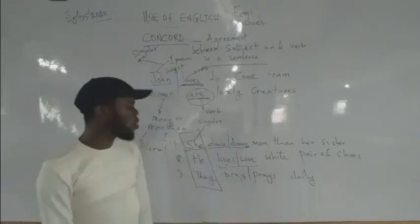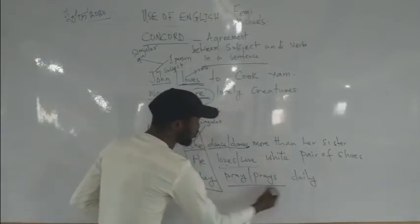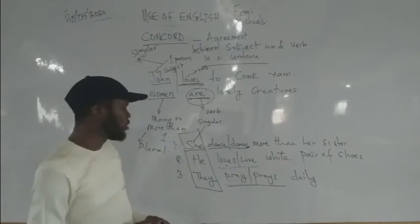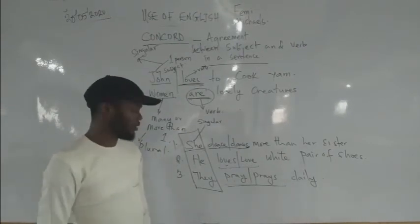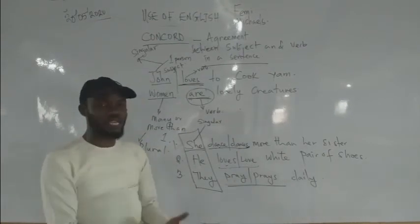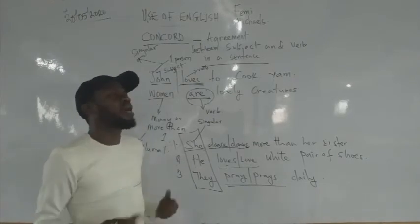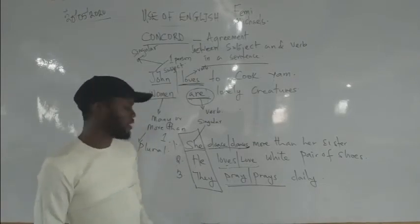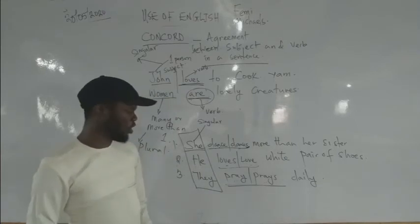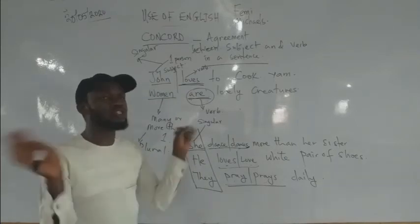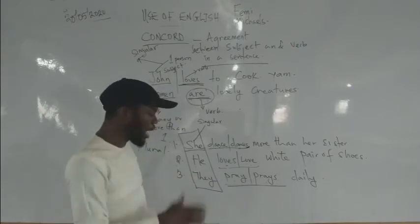There are two verb options: 'praise' and 'pray'. Which one do we pick? The plural verb does not have S at the back. 'Pray' has no S, so it is the plural verb. Since 'they' is plural, we pick the plural verb — 'pray'. The verb without S is saying: I am not singular, I am plural.